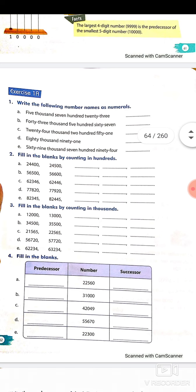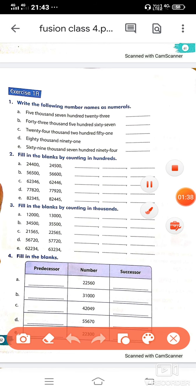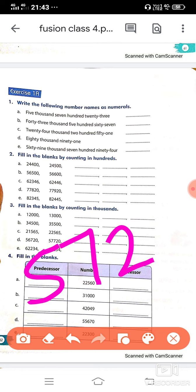Now we are going to the exercise. Write the following number names as numerals. We have to write the number names as numbers. First let's see 5,000. How do we write 5,000? We write 5, then 700, then 7, then 23 we write.